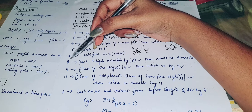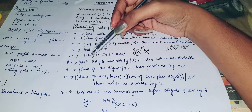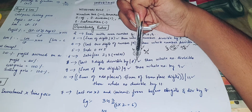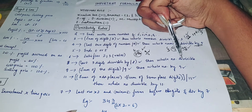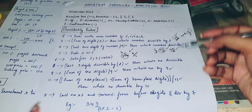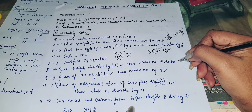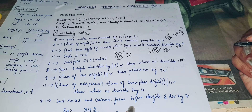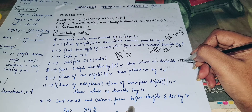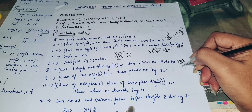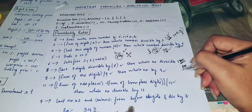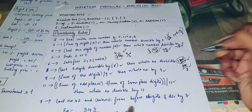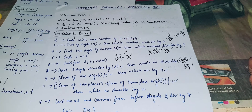Divisibility rule of 8: the last three digits of the number must be divisible by 8, and then the whole number is divisible by 8. For example, 1800 — 800 is divisible by 8, so the full number 1800 is divisible by 8.